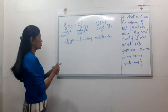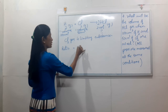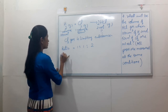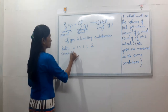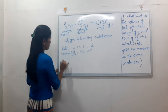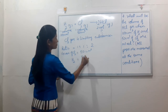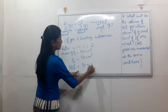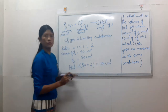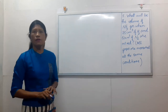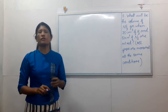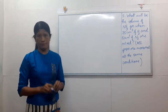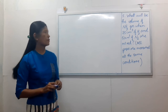Cl2 is the limiting substance. The ratio is 1 to 2. So the solution is H2 excess is 50 cm³. The limiting reagent determines the product, so the volume of HCl produced is 50 cm³.